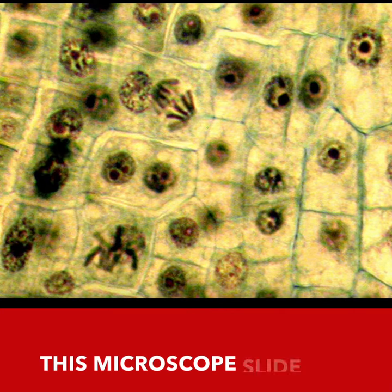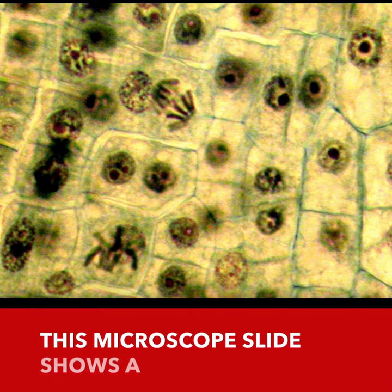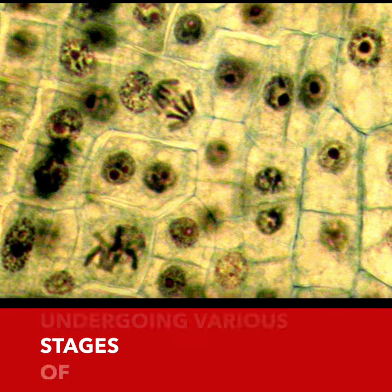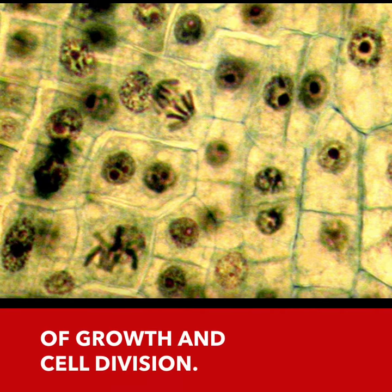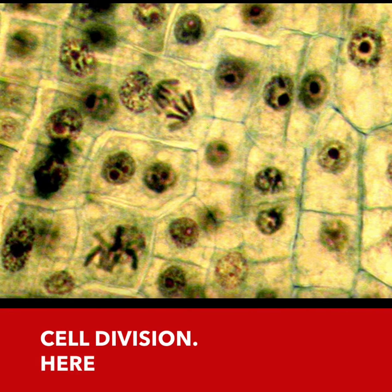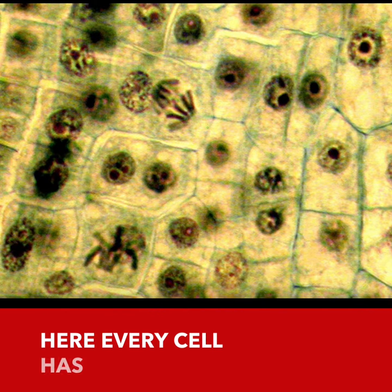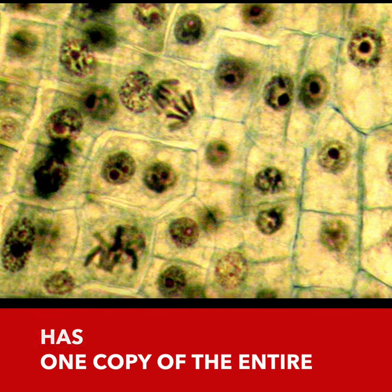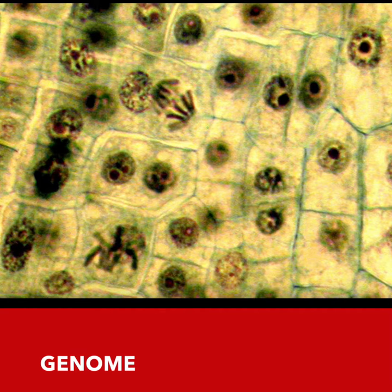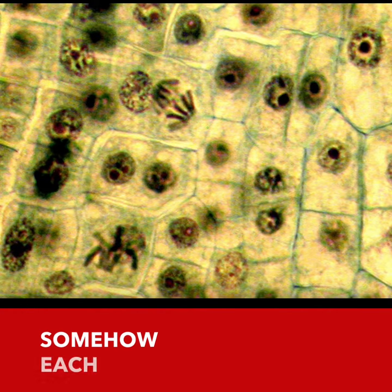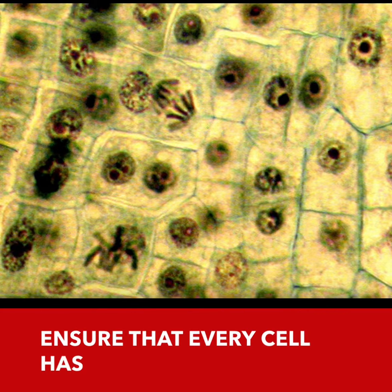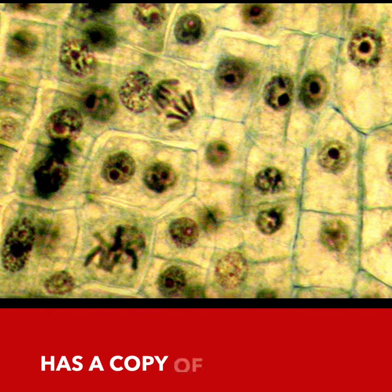This microscope slide shows a number of plant cells undergoing various stages of growth and cell division. Here, every cell has one copy of the entire genome. Somehow, each organism needs to ensure that every cell has a copy of its genome.